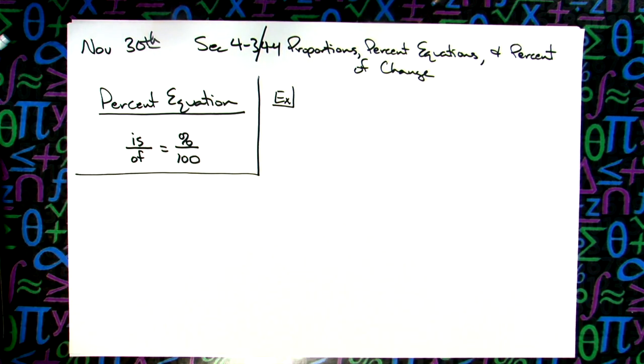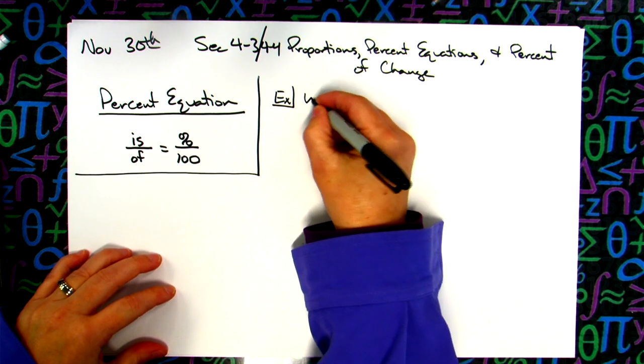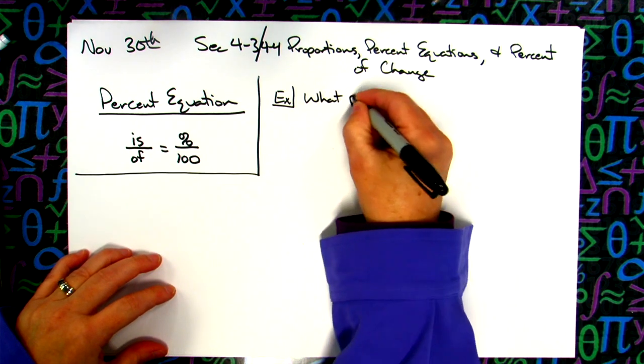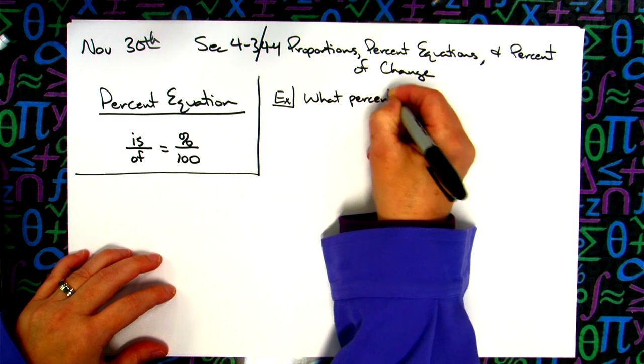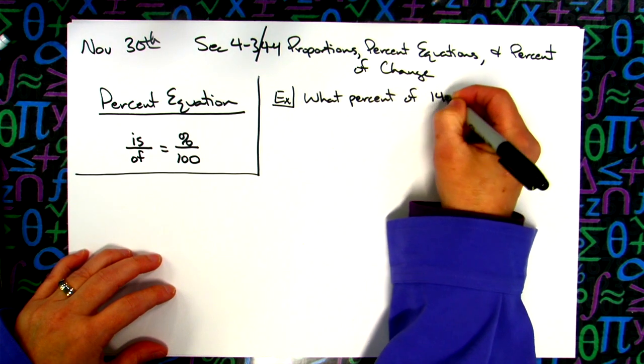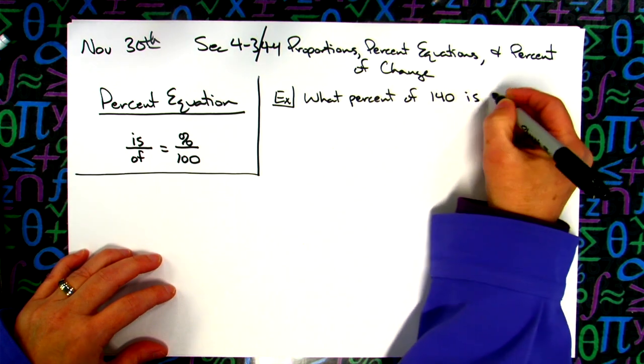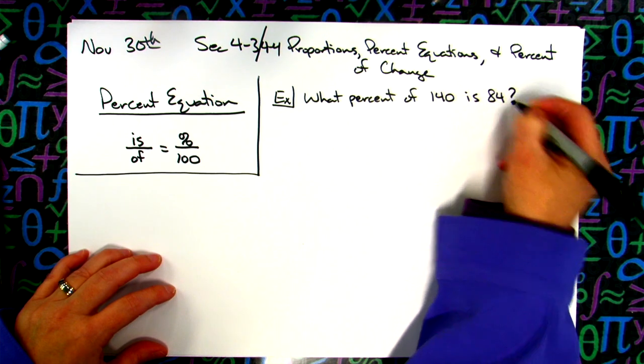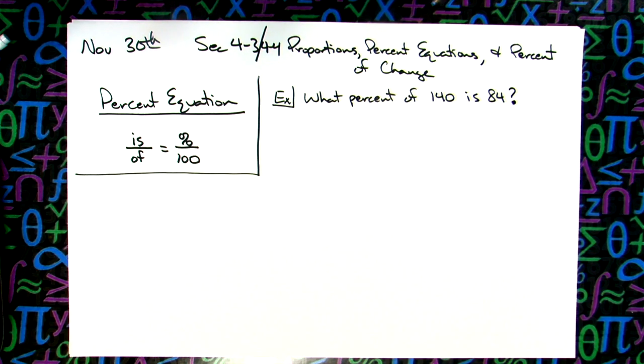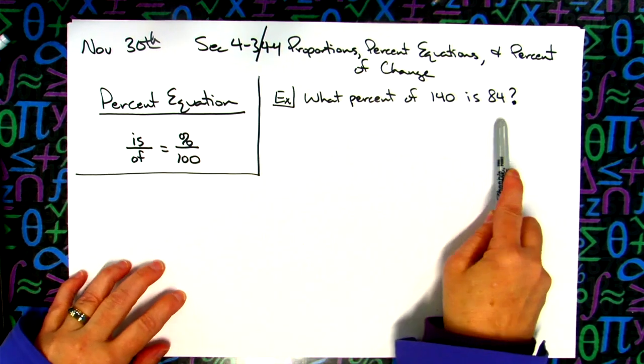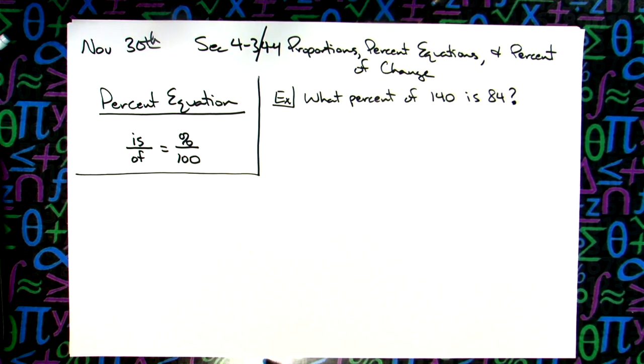The questions are going to be phrased as sentences. This one might say what percent of 140 is 84. The thing is that question is going to change. They can phrase them lots of different ways. They can ask for the percent, they can ask for the is number, they can ask for the of number. We want to have one formula for every question no matter how they phrase the question.